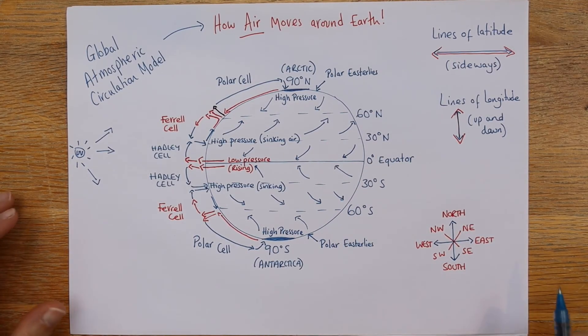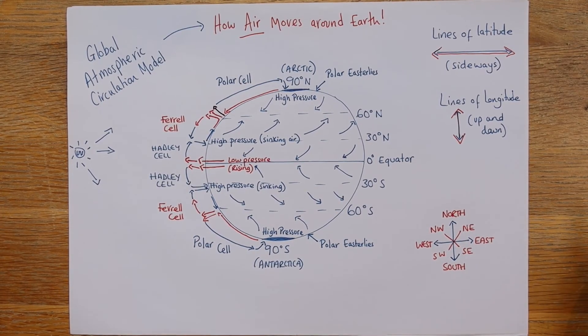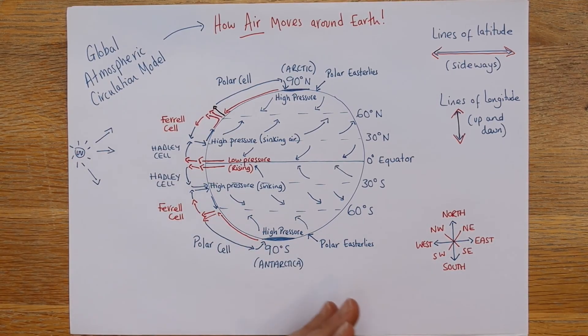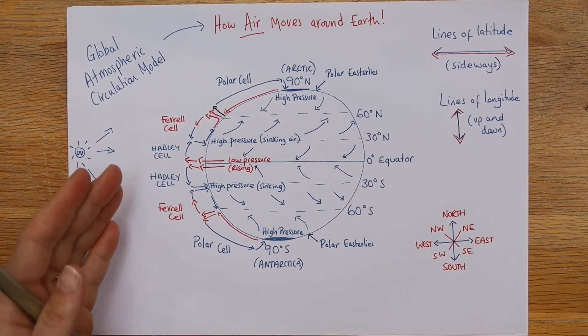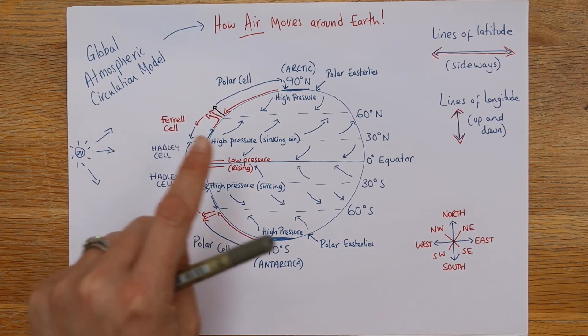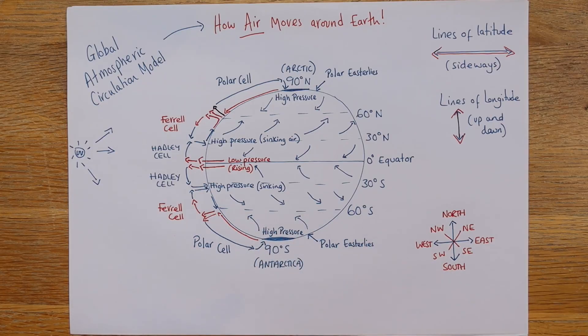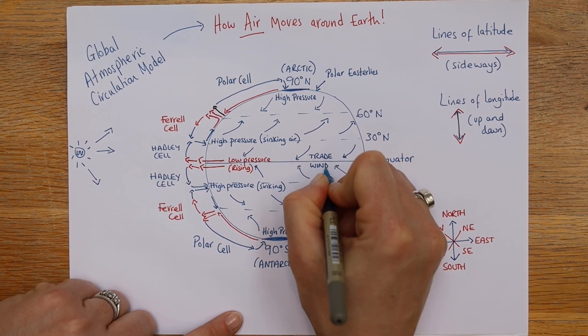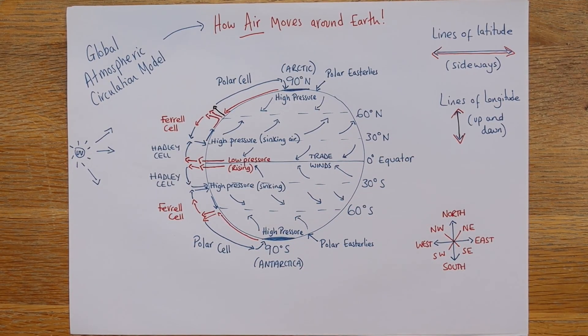That is how air moves around Earth. That is the global atmospheric circulation model. And it's useful not just on its own in the spec, but also when we think about weather patterns, extreme weather in the UK, and just how things occur. Even if there was, for example, a volcano erupting in one part of the Earth, these trade winds would move the ash from one place to another. So, it's useful to remember. In fact, just write trade winds onto your diagram. So, there you go. I hope that's helpful.